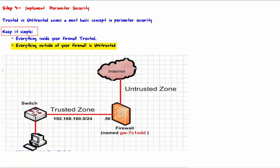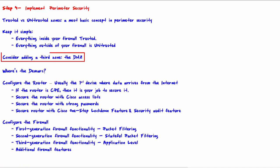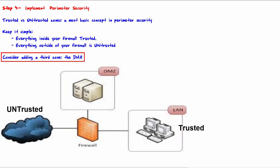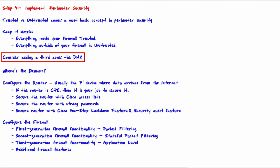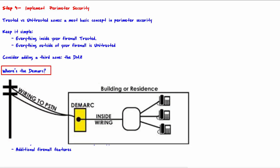Consider adding a third zone: the DMZ. The two-zone architecture is generally sufficient for SOHO (small office/home office) setups, while businesses that have servers accessible to the public may add a third zone called the DMZ and place the servers in it. Because these servers may be vulnerable to attacks from the untrusted network, communication from the DMZ to the trusted zone is carefully controlled by the firewall.